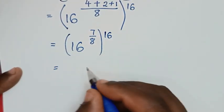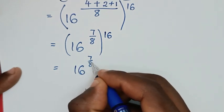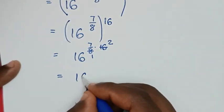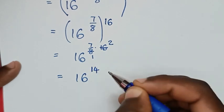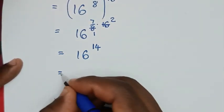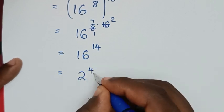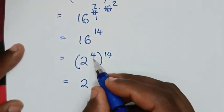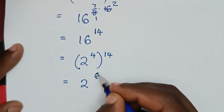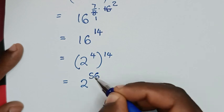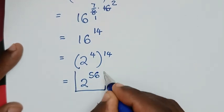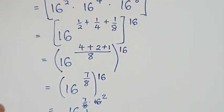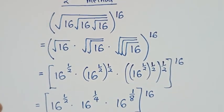Then it will be equal to — we open the bracket — so it will be 16 power of 7 over 8, times this 16. To simplify, by 1, this by 2 — so it will be equal to 16 power of 7 times 2, it is 14. Then, 16 to the base of 2: 16 is the same as 2 power of 4, bracket, power of 14. Then it will be equal to 2 power of 4 times 14: 4 times 4 is 16, carry 1; 4 times 1 is 4, plus 1 is 5. So 2 power of 56 is our final answer. Thank you for watching, don't forget to subscribe to my channel, and see you in the next video.